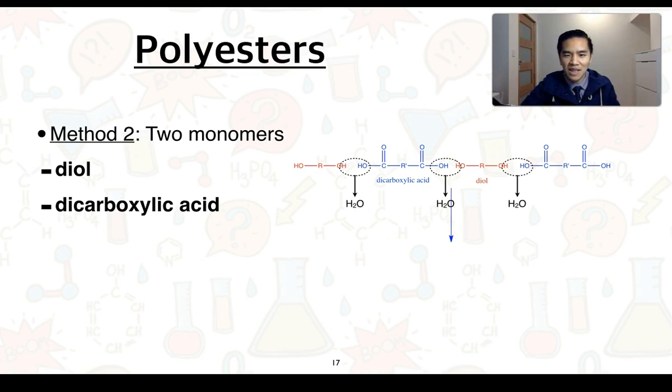We can see that these particular atoms would be removed as water, being a condensation reaction. We're going to now get the join of these atoms with one another, and we're going to form our long chain polyester.